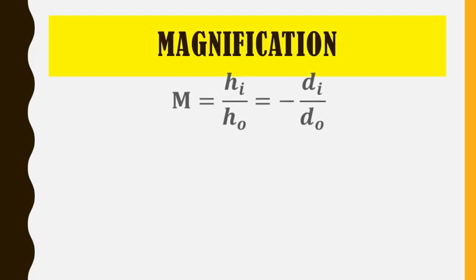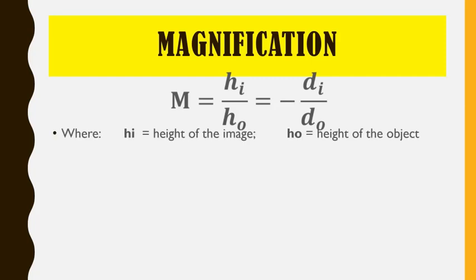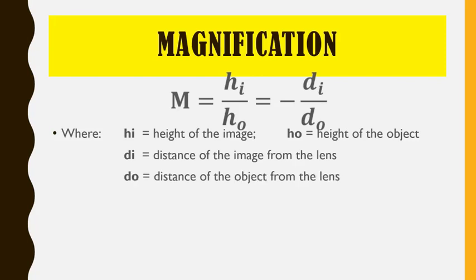For the magnification, again, it is also similar to what we learned from the mirror. It is M equals height of the image divided by height of the object, or we can use M equals negative DI over DO. HI is the height of the image, HO is the height of the object, and DI and DO are the respective distances. Please take note that magnification is unitless or dimensionless, because we are just getting the ratio of two same quantities. Magnification will tell us how much the size of the image has changed compared to our object.